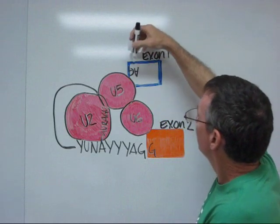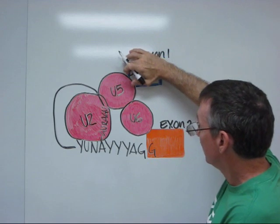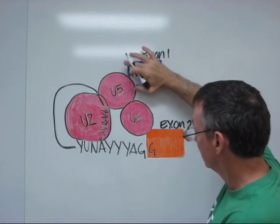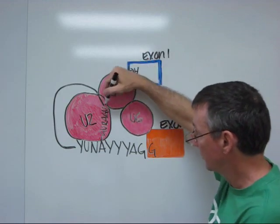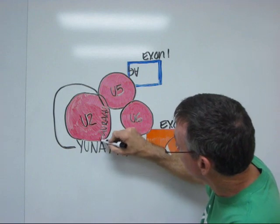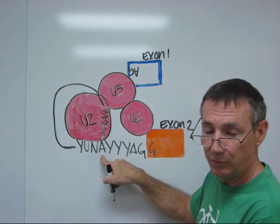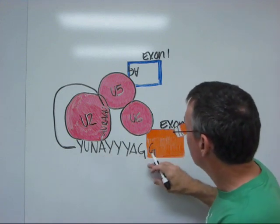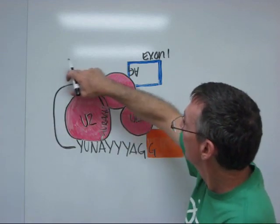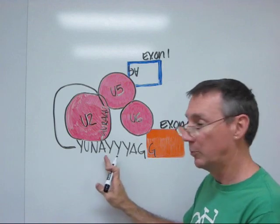So here we have what's formed after the first transesterification reaction. The donor site bond has been cleaved, so the exon here is sitting out, just held on by the C complex. The five prime end of the intron is now attached by a five prime to two prime phosphodiester bond to the branch point. This structure of the intron now, the intron goes from a three prime end here around this loop to the five prime end, which is then attached in the middle at the branch point.